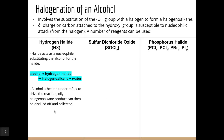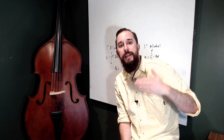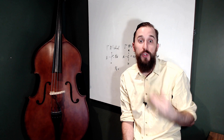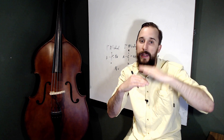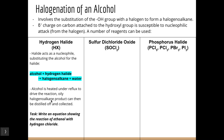The oily haloalkane product can then be distilled off and collected — distillation being a separation technique based on differences in boiling point. Your task: write an equation showing the reaction of ethanol with hydrogen chloride. Using the general equation, ethanol plus hydrochloric acid — we substitute the hydroxyl for the chloro — and we end up with chloroethane and water as our byproduct.